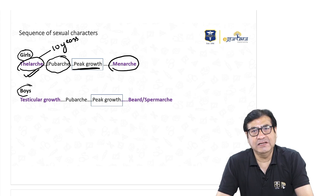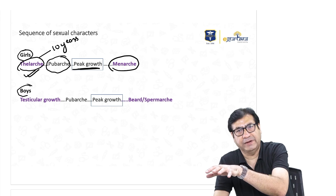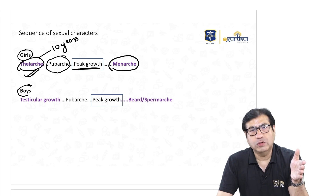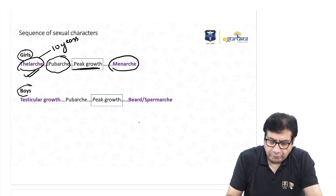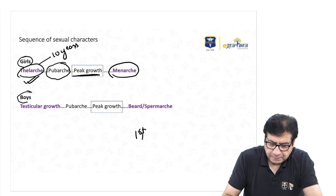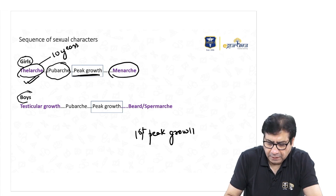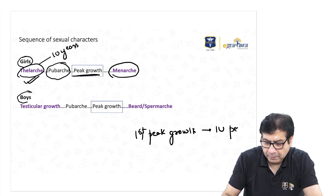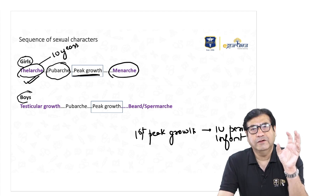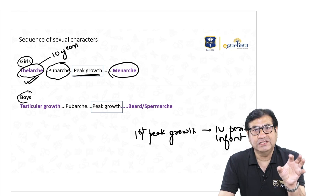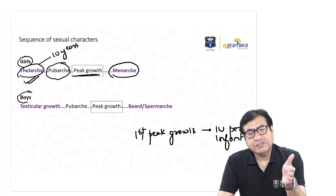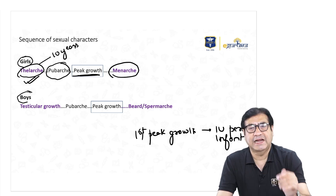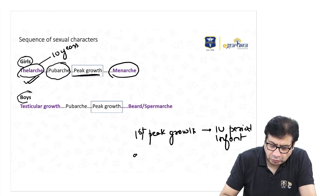Growth occurs throughout childhood, but there are two periods when growth accelerates faster than the rest. The first peak growth period is the intrauterine period, and this rapid growth continues into the first year of life, when the child is called an infant. So the intrauterine life and infancy together constitute the first peak growth period.